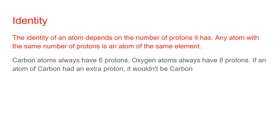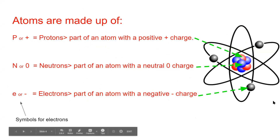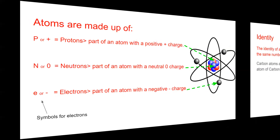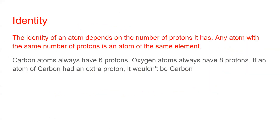The identity of an atom — what kind of element it is — depends on how many protons it has. Any atom with the same number of protons is an atom of the same element. So if an atom has three protons, it's lithium; four protons, it's something else; six protons, it's carbon; seven protons, it's nitrogen. Depending on how many protons it has, that's what element it is.